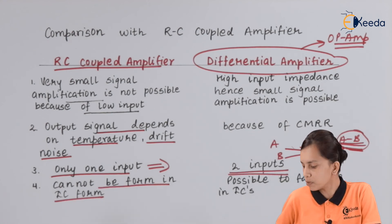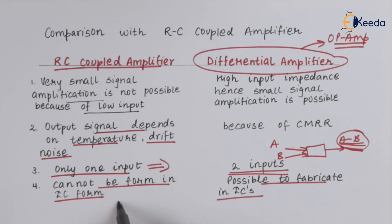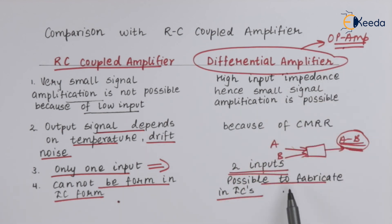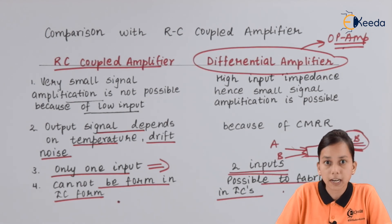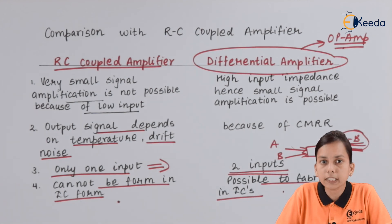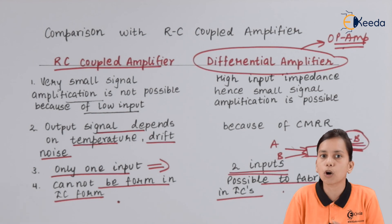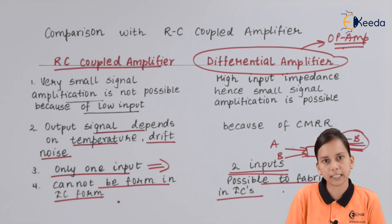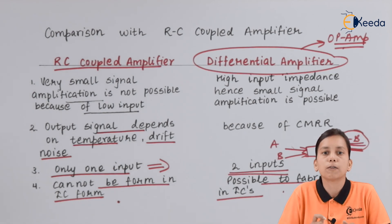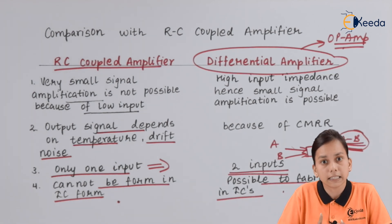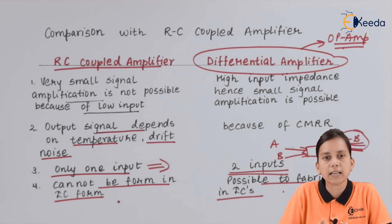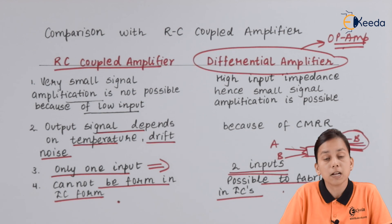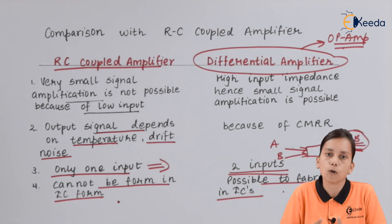Fourth point: RC coupled amplifier cannot be formed in IC form, whereas it is possible to fabricate the op-amp in the form of an IC. This is one of the most important points that compels us to use op-amp. In today's world we always want electronic devices that are compact in nature, and whenever we talk about compact size we focus on ICs. That's why we prefer op-amp over RC coupled amplifier, though RC coupled amplifier has its own advantages. It has now been replaced and standardized by op-amp.